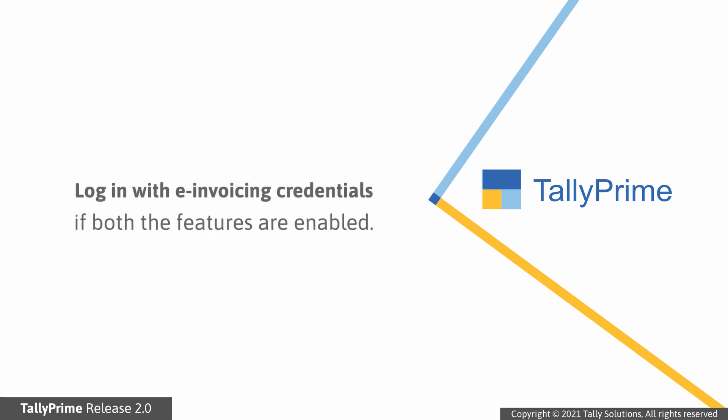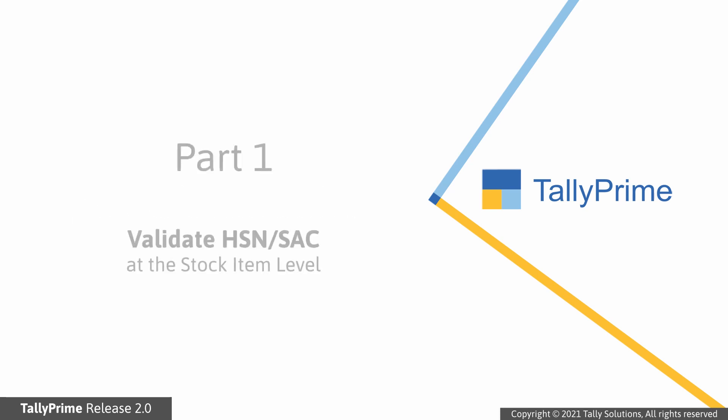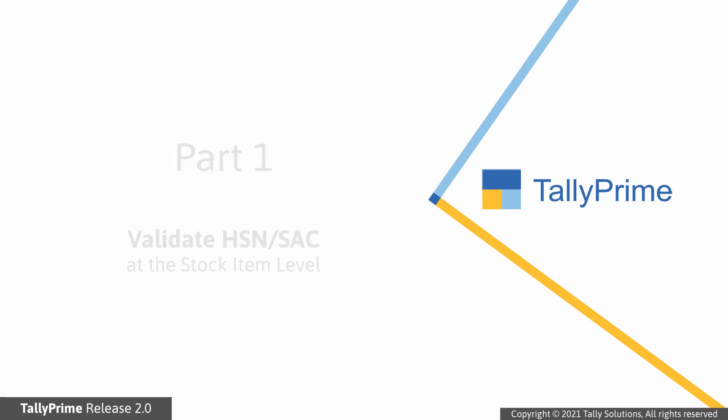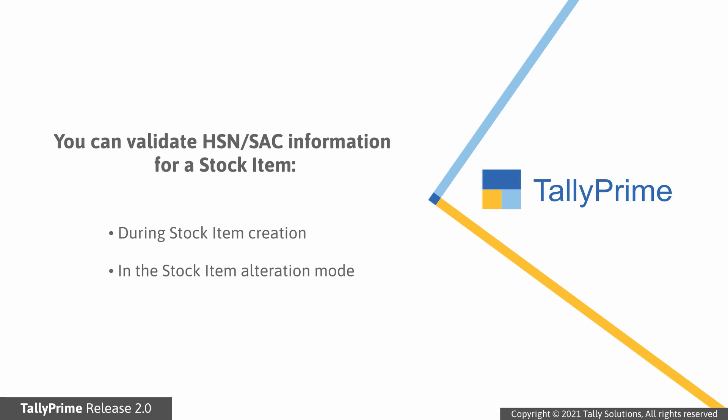If both features are enabled, then you will need to log in with e-invoicing credentials. Let's look at the process of validating HSN or SAC information at the stock item or stock group level. It is recommended to validate the HSN or SAC information during stock item creation. However, you can also do it in the stock item alteration mode.